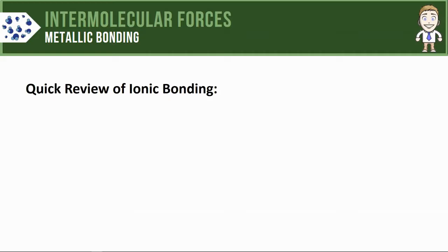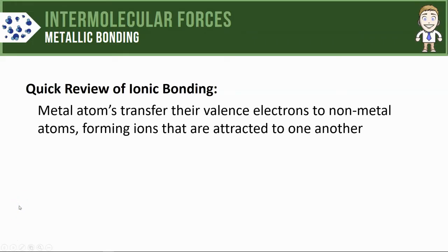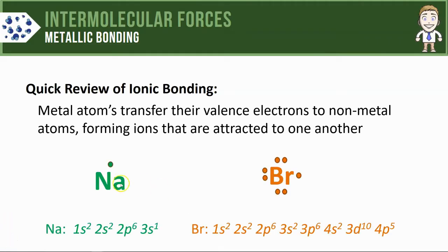Before we look at metallic bonding, let's review a type of intramolecular bonding you're more familiar with: ionic bonding. In ionic bonding, metal atoms transfer their valence electrons to non-metal atoms, forming oppositely charged ions that attract each other. We can see this with sodium and its one valence electron — it transfers that valence electron to the bromine atom. Sodium now has a +1 charge and bromine has a -1 charge, and they're attracted to each other.